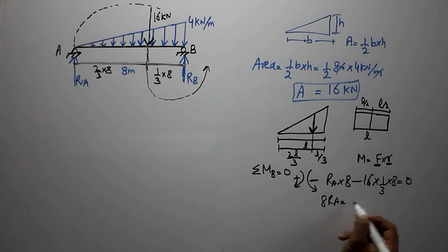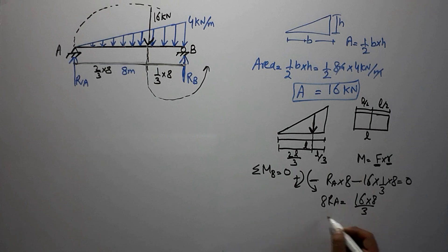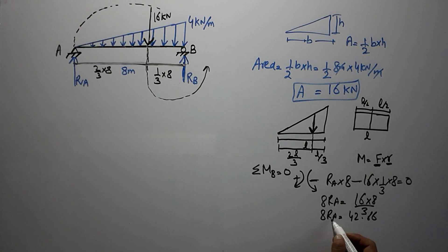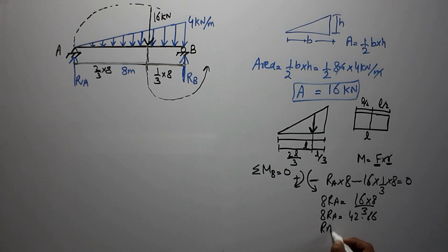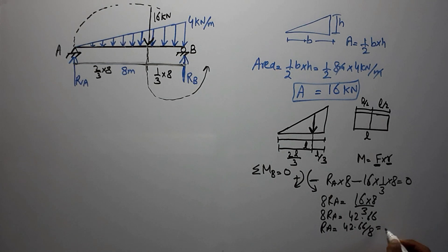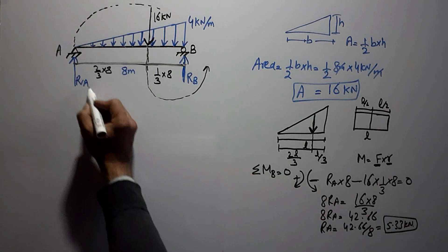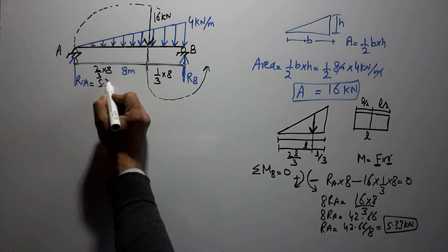Moving the load term to the right side: 8·RA = 16 × (8/3) = 42.66. Dividing both sides by 8, we get RA = 42.66 / 8 = 5.33 kN. So the reaction at support A is 5.33 kN.